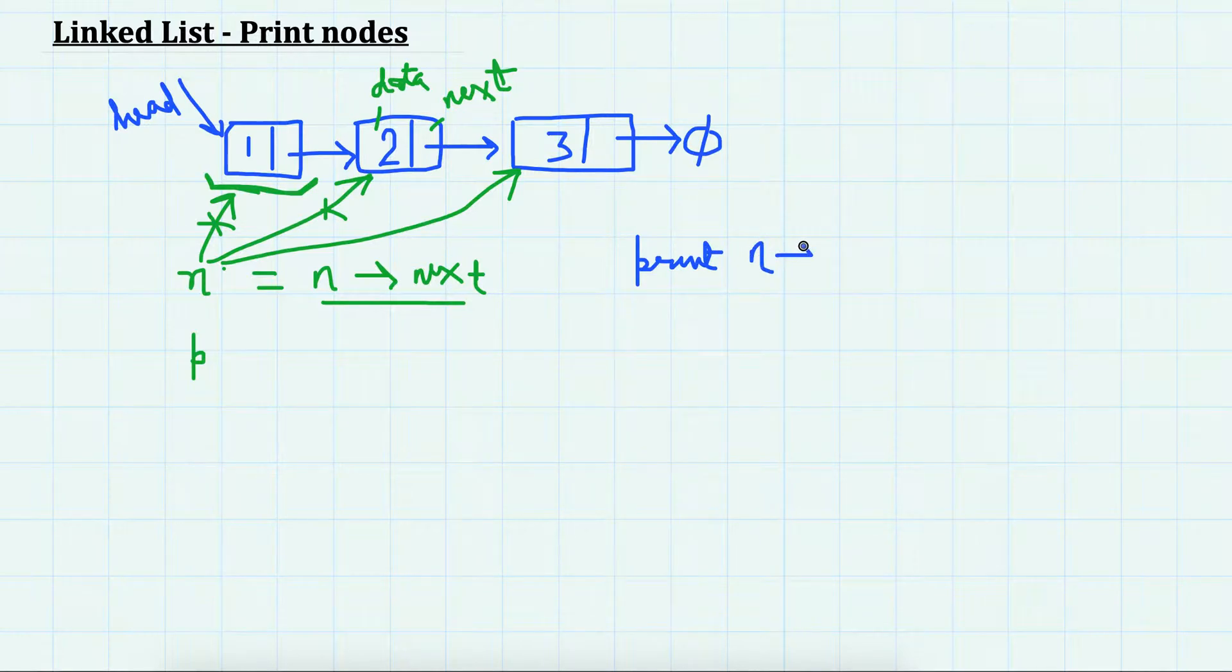Print its data, and move it to next. And the condition is n is not equal to null.